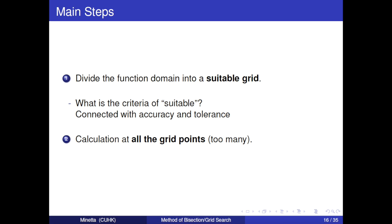The main steps are easy to see but hard to do. First, divide the function domain into a suitable grid. However, what is the criteria of suitable? It is connected with accuracy and tolerance. You can see it in the next example. Then, do calculation at all the grid points. However, there are too many grid points.